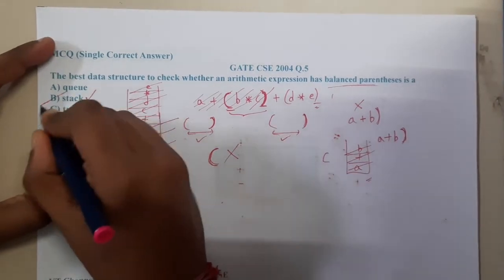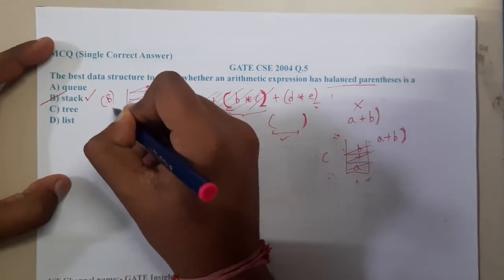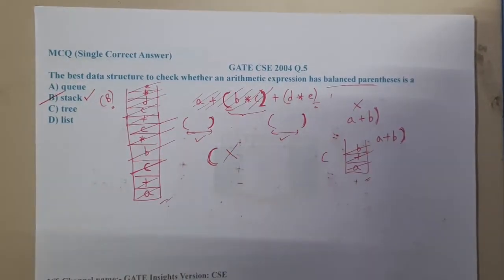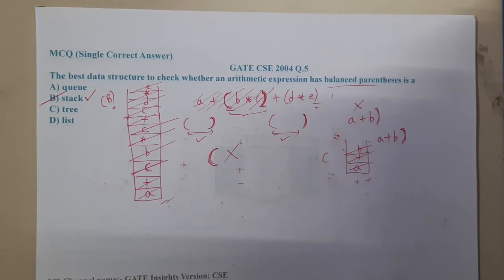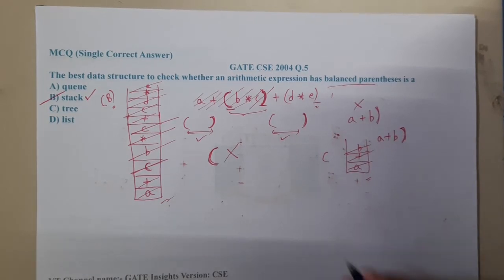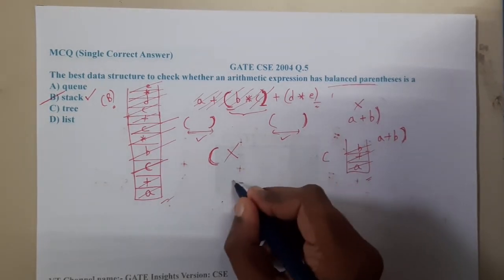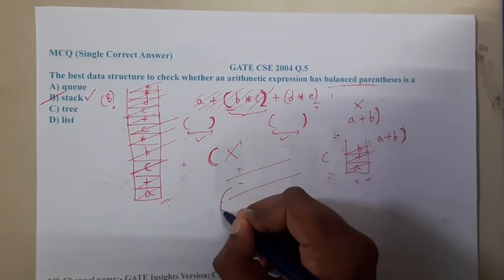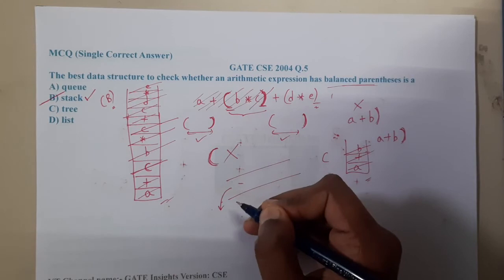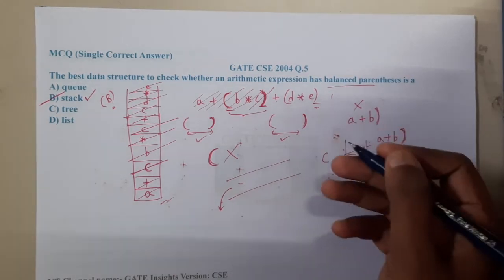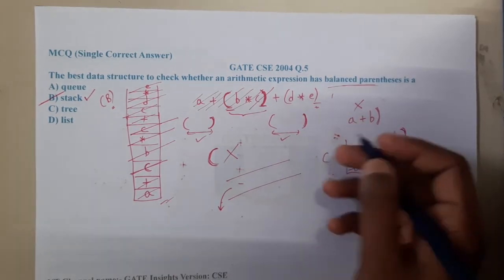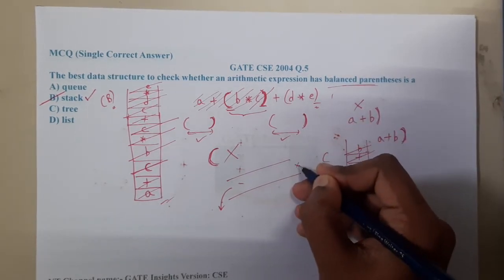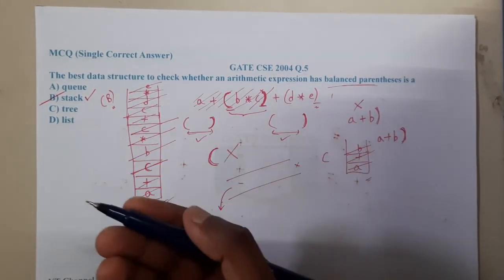So now you have a clear idea of why stack is the best approach for checking balanced parentheses. If you try with a queue, it pops from the other end, so you cannot balance them properly. The same applies to trees and linked lists — they are not suitable for this purpose.